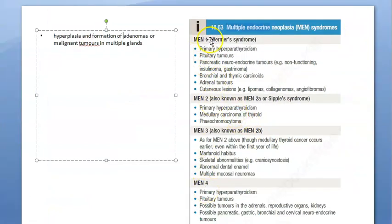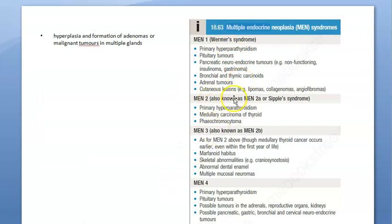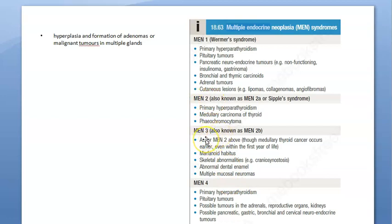There are four MEN types. MEN 1 is called Wermer's syndrome. Then you have MEN 2, which is divided into 2A and 2B. MEN 3 is nothing but 2B, and then you have MEN 4. So only four MEN types, and 2B is nothing but three.